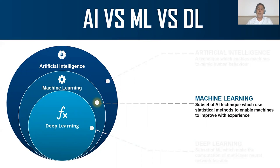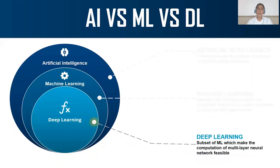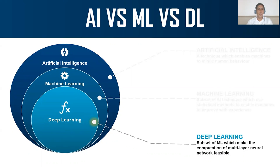Deep learning is also a subset of machine learning — it is an extension of machine learning. It uses neural networks to solve complex problems. So that is deep learning.